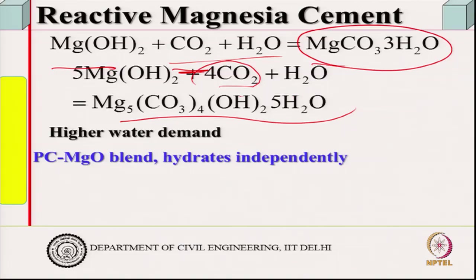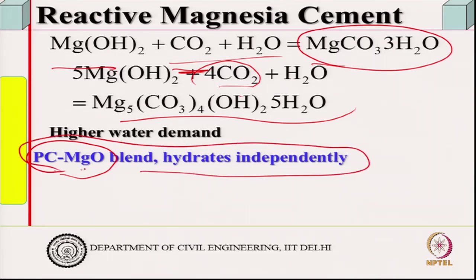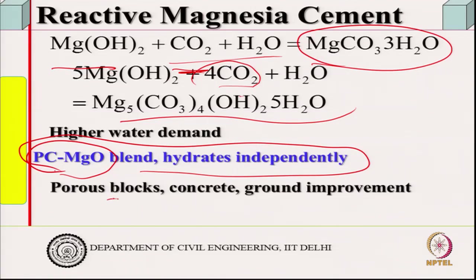These reactive magnesia systems are all still in the attempted/research stage — not yet in the market; it will possibly take some more time. Portland cement–magnesium oxide blends have also been explored, where Portland cement hydrates independently and the magnesium oxide works separately as a separate carbonation binder. People have tried these combinations.